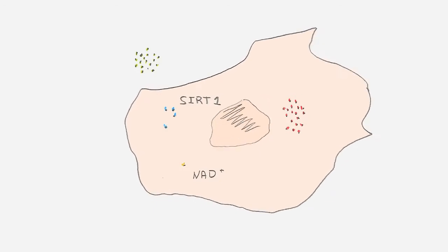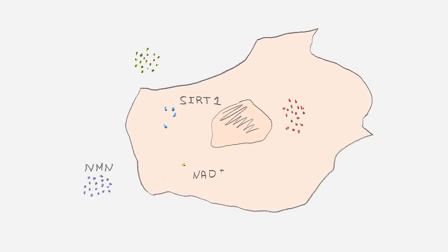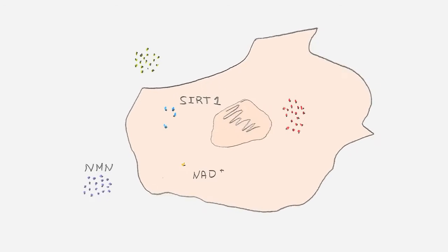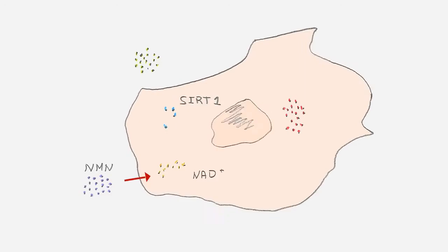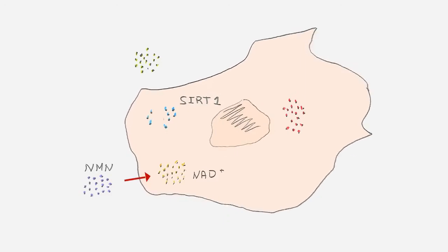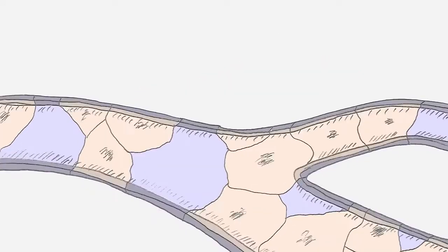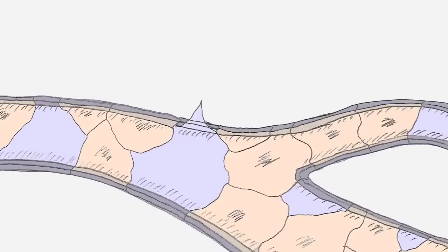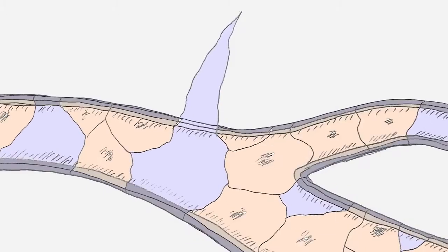In our new study, we gave mice NMN, a chemical compound commonly found in the body and previously shown to boost NAD levels, which in turn boosts SIRT1. These mice had better endothelial function, blood vessel growth, and improved blood supply to their muscles.